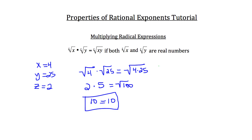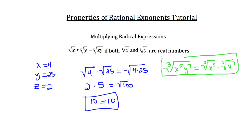You could also work a problem backwards. If you had the cubed root of x to the fifth times y to the seventh, you could rewrite that as the cubed root of x to the fifth times the cubed root of y to the seventh. That's just working backwards using the generic model.